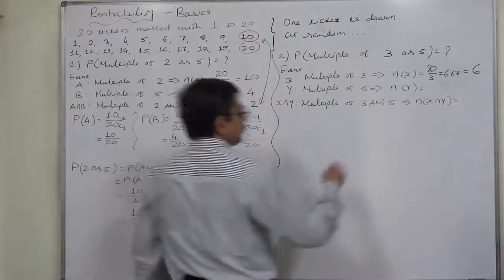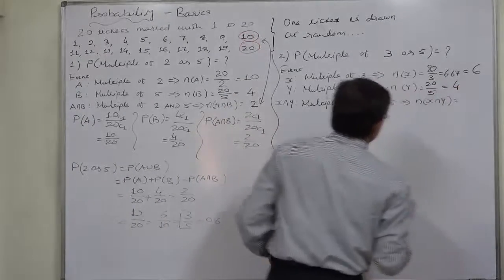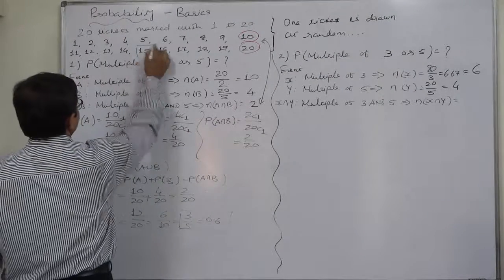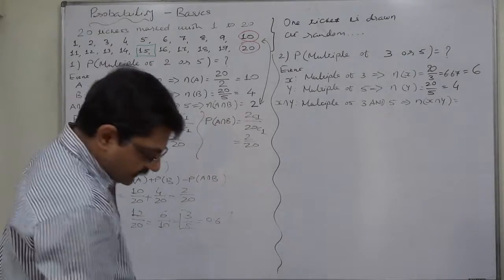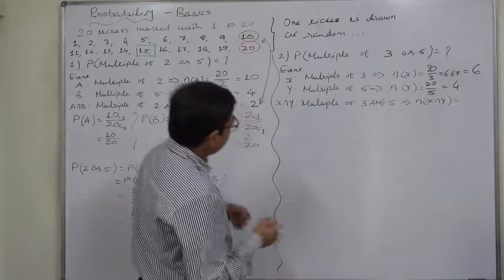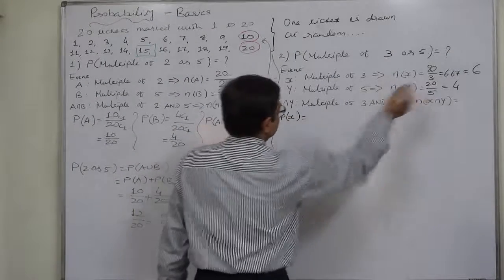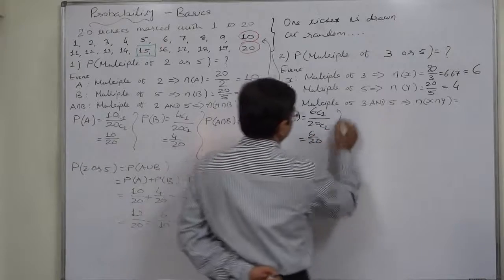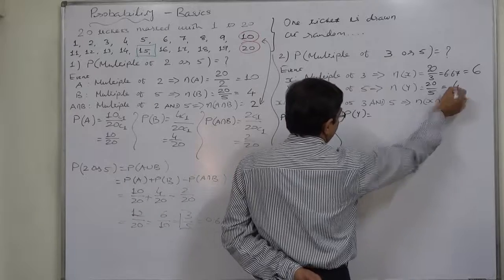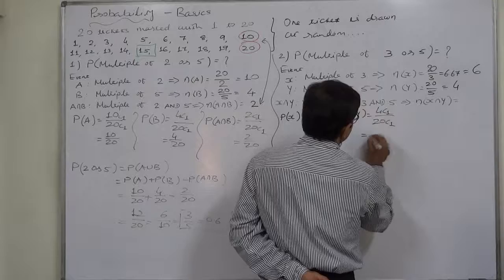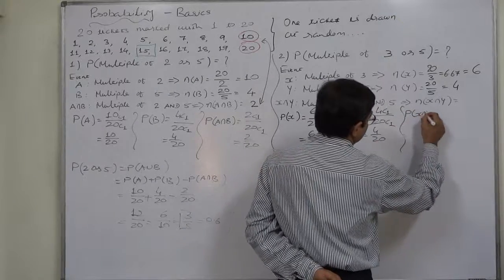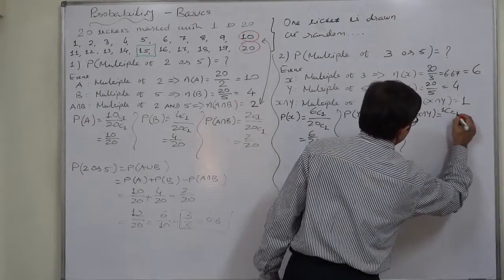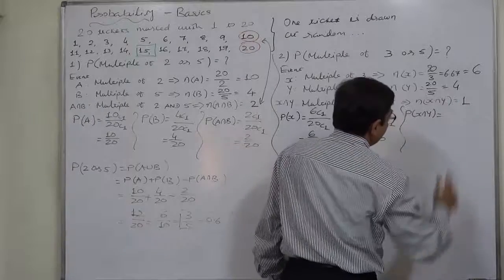The multiples of 5 remain 4 as before. For multiples of both 3 and 5, the only value is 15 — there is no other value. So the number of favorable cases for X intersection Y is 1. P(X) = 6C1/20C1 = 6/20, P(Y) = 4C1/20C1 = 4/20, and P(X intersection Y) = 1C1/20C1 = 1/20.